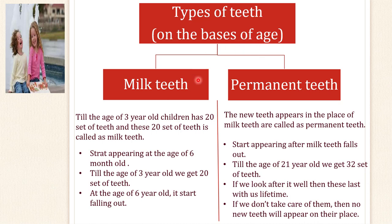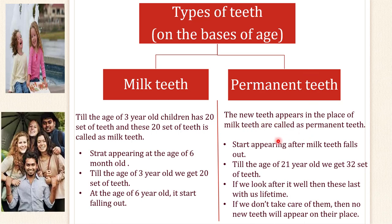On the basis of age, there are two types of teeth: milk teeth and permanent teeth. Till the age of 3 years, children have 20 sets of teeth, and this set is called milk teeth. They start appearing at the age of 6 months and by age 3 we get all 20. At the age of 6, milk teeth start falling out, and their place is taken by new teeth called permanent teeth. These start appearing after milk teeth fall out, and by the age of 21 we get 32 teeth. It is very important to take care of permanent teeth, as no new teeth will appear if these fall out.